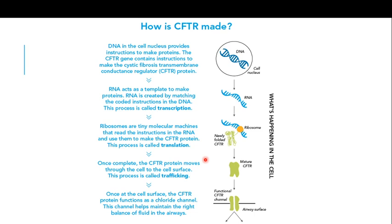Once the protein has been made, the CFTR protein moves through the cell to the surface — a phenomenon known as trafficking. Because CFTR is an ion channel, it is needed on the surface of the cell. Once the protein is made and matured, the mature CFTR protein moves to the surface of the epithelial cells, where it maintains the chloride ion concentration inside and outside at the level required by the cell.